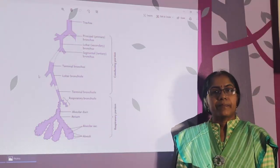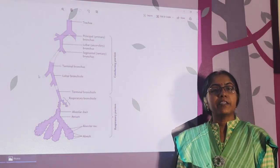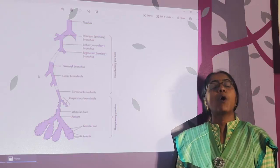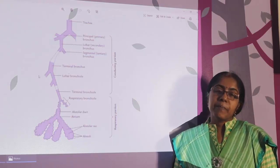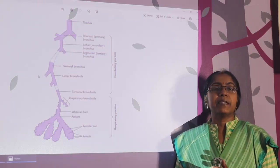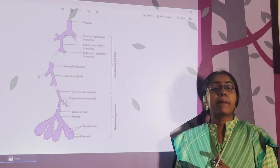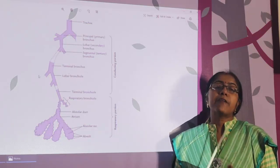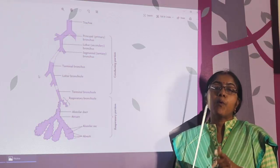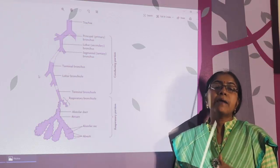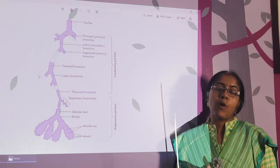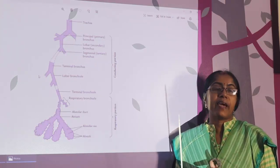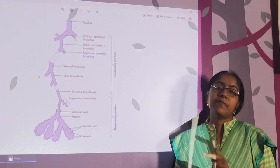Now, nerve supply. The lung has autonomic supply — that is sympathetic and parasympathetic supply. Sympathetic supply is derived from the upper four or five segments of the spinal cord. Parasympathetic fibers are derived from both vagus nerves — that is the right and left vagus.